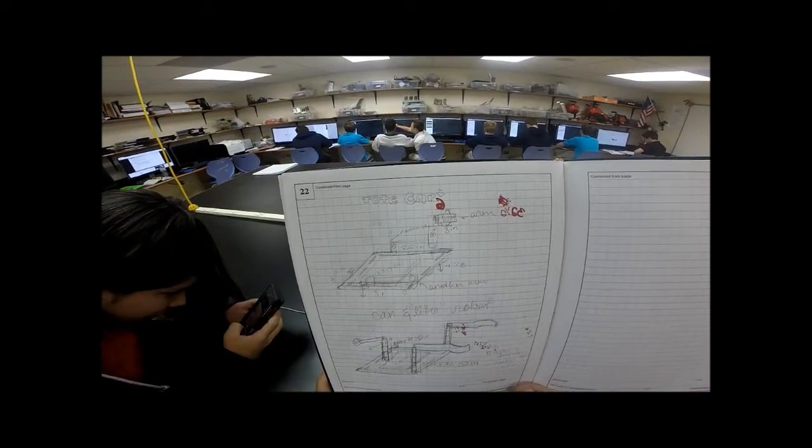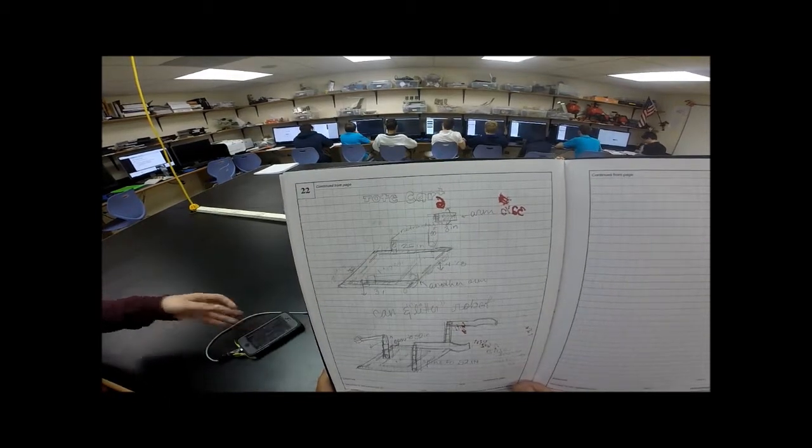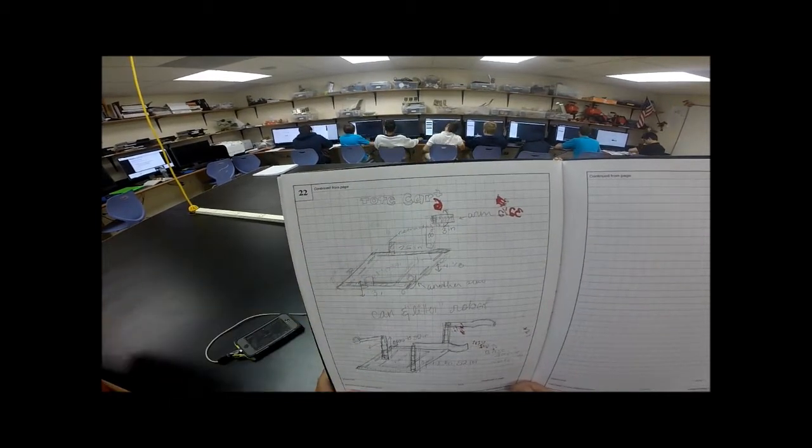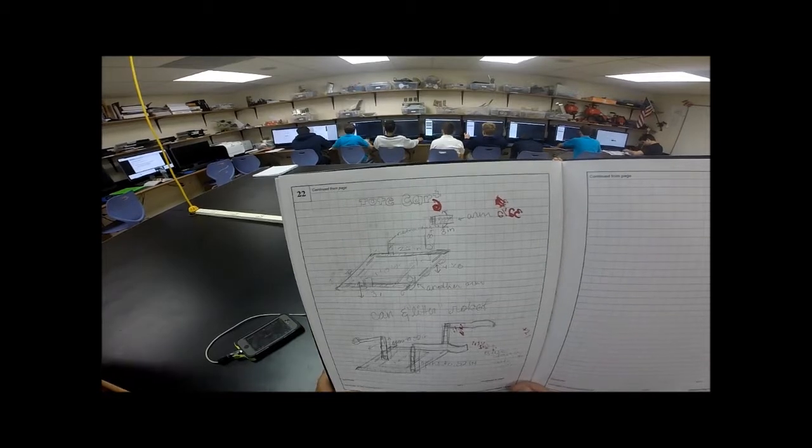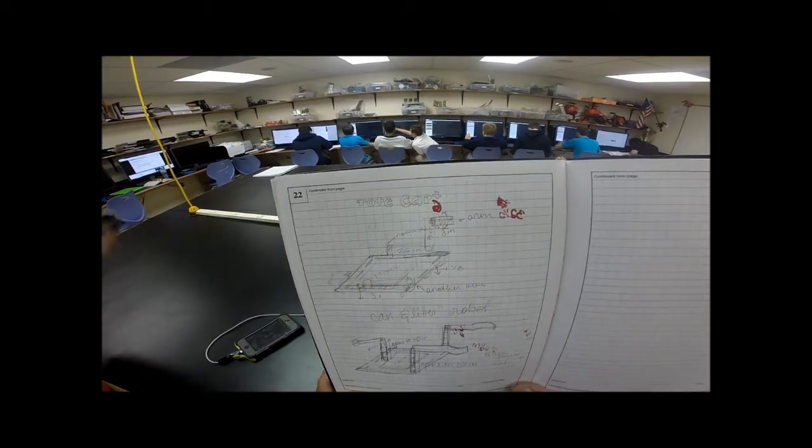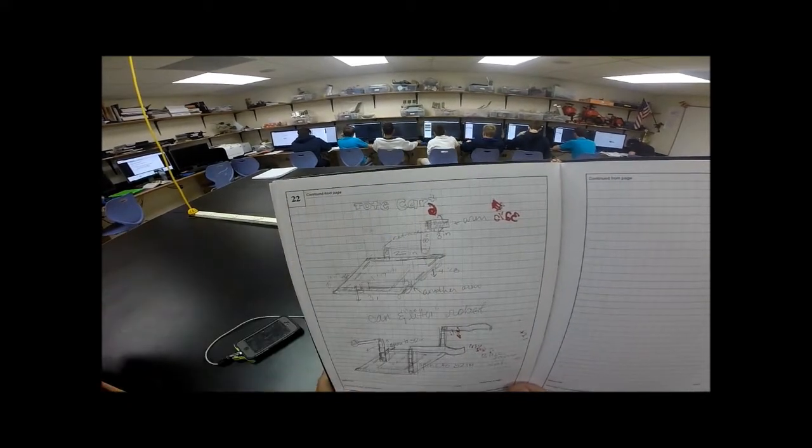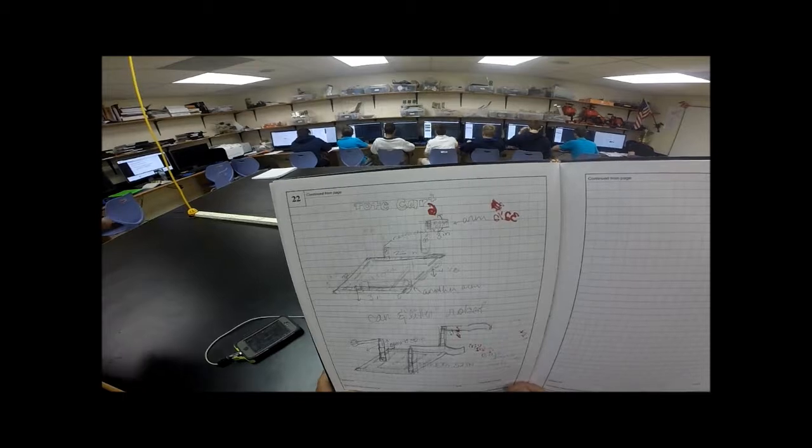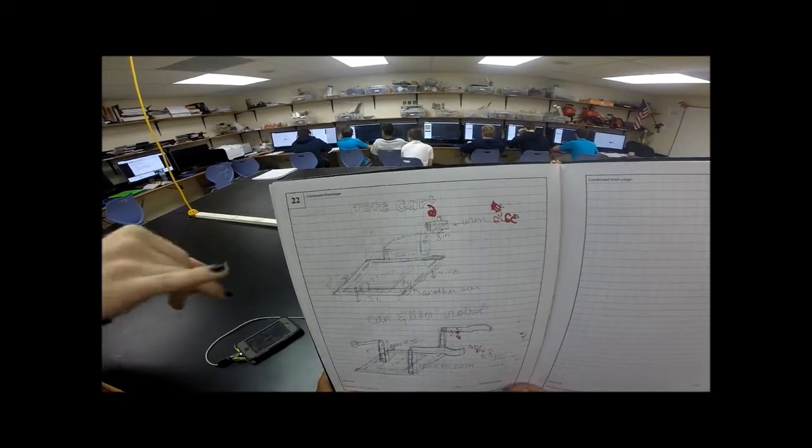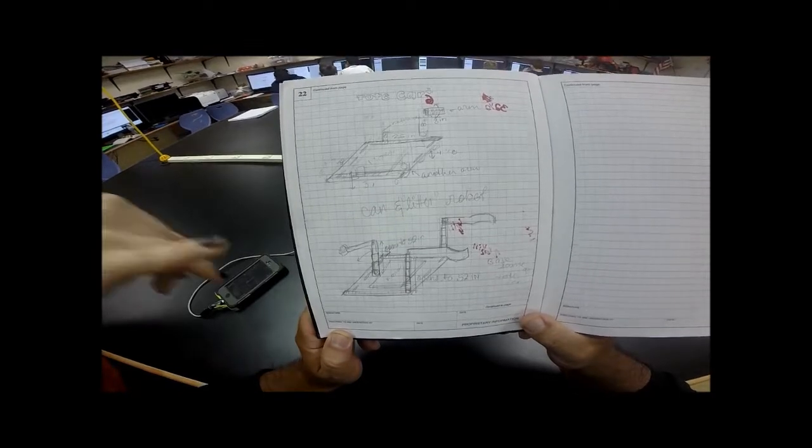For this robot I thought that the arms would be on conveyor belts so that you can move it forward and back easily. The arms bend to grab totes, and this rubber pad is for the friction to be able to pick it up.